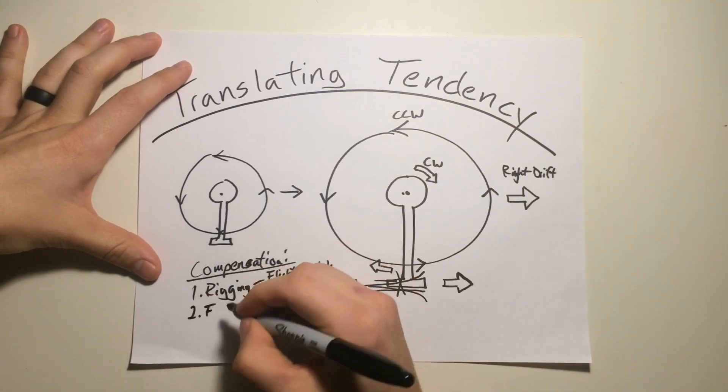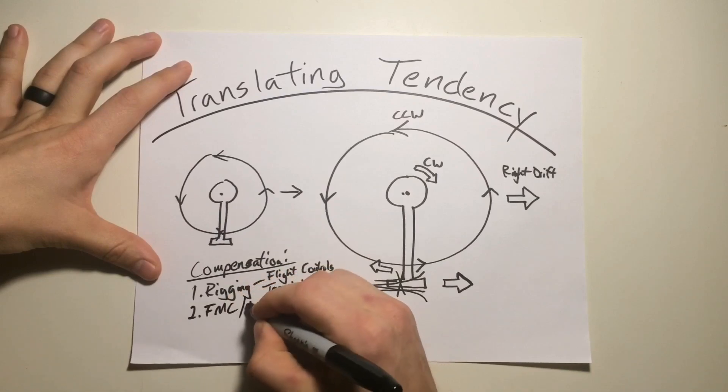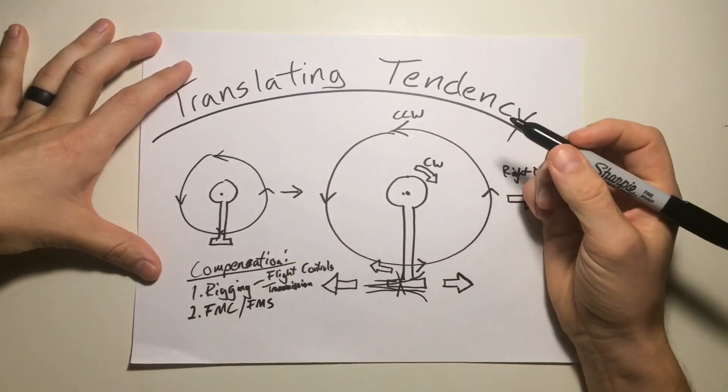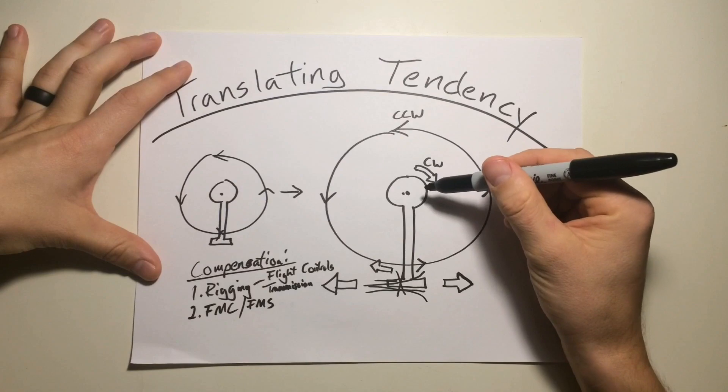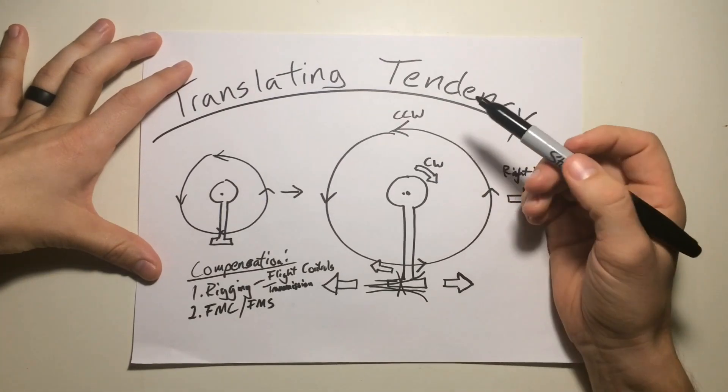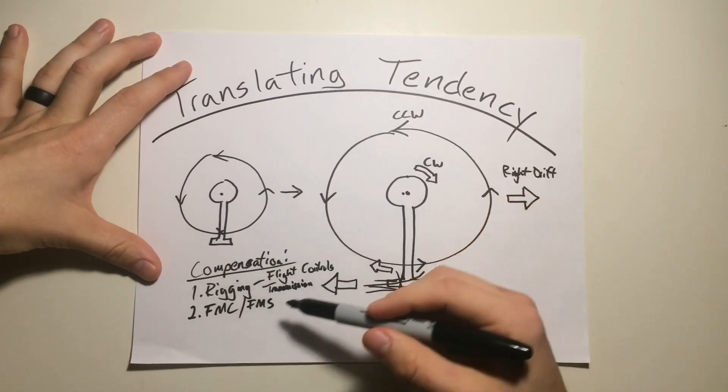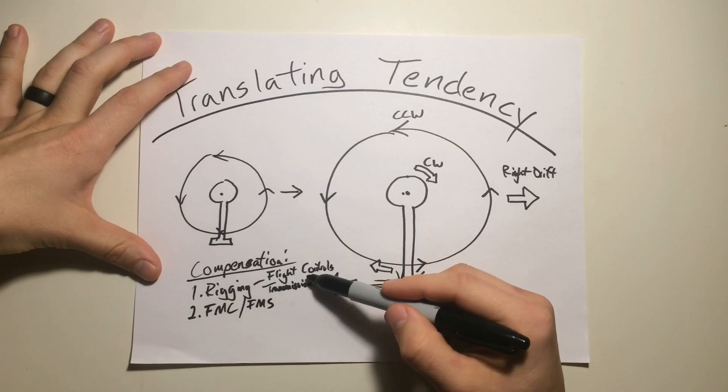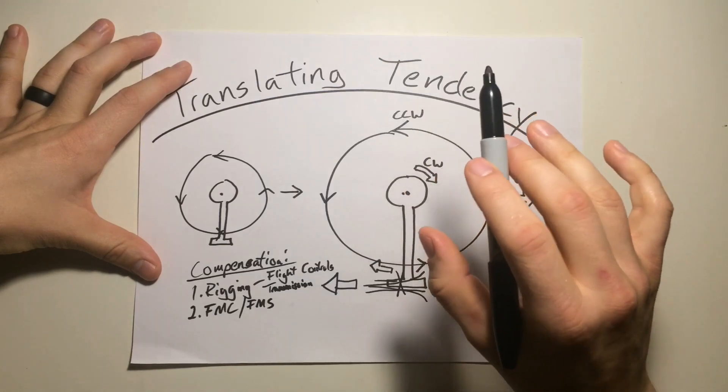Another technique for this, for compensation, would be a flight management computer or some kind of flight management system that automatically makes these inputs for you whenever you pick it up to a hover. It knows that you're picking the helicopter up, and it makes the necessary flight control input to maintain a stationary hover.